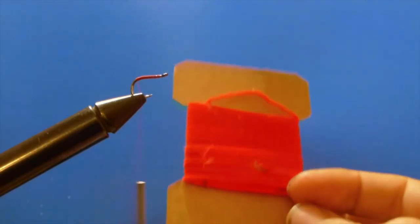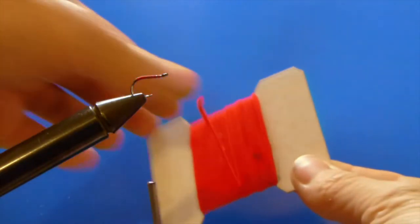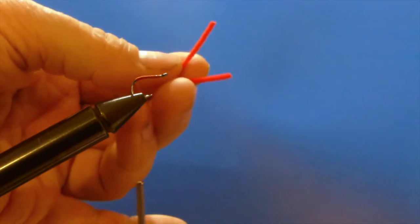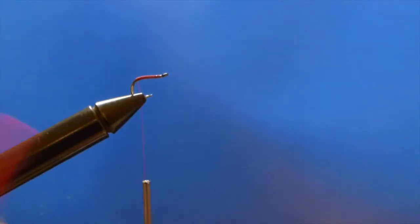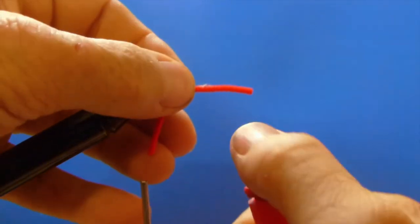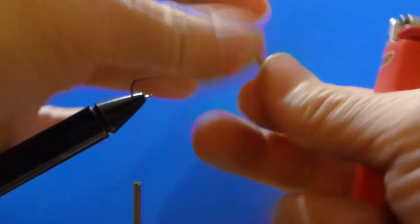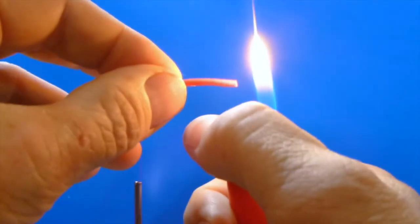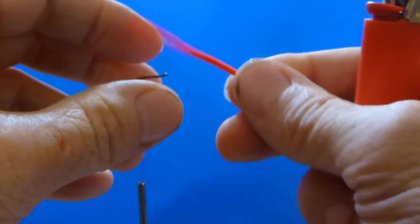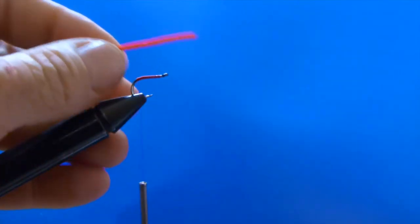So we've got a nice red ultra chenille, fairly small in diameter, and we want a piece that's roughly an inch and a half to two inches long. We can always trim it down at the end. So we just give it a little singe, tap the ends with our fingers, and we're good to go.